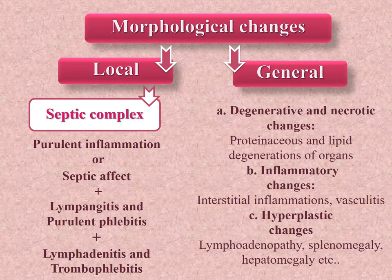Morphological changes may be local and general. Local changes occur at the portal of entry — the local lesions, termed the septic complex, include purulent inflammation, lymphangitis, lymphadenitis, purulent phlebitis, and thrombophlebitis. General changes occur in other organs and tissues: degenerative and necrotic changes, proteinaceous and lipid degeneration of organs, inflammatory changes, interstitial inflammation, vasculitis, and hyperplastic changes — lymphadenopathy, splenomegaly, hepatomegaly, etc.